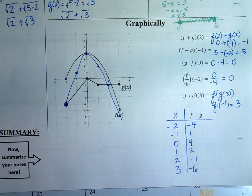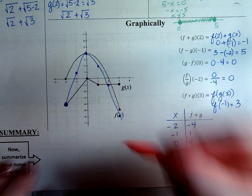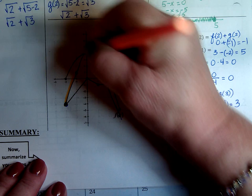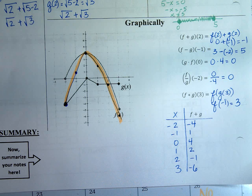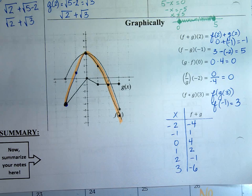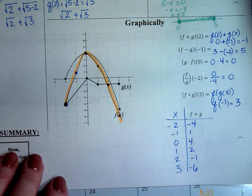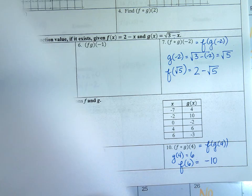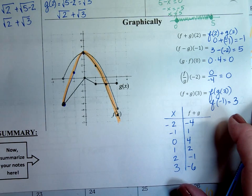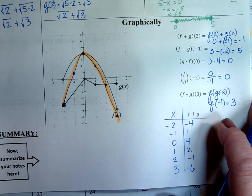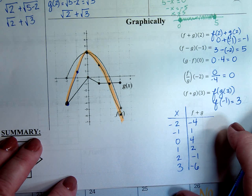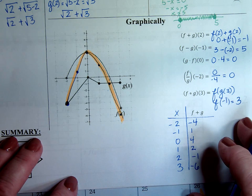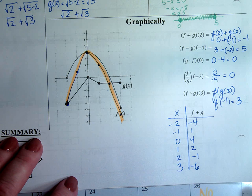That covers the problems we looked at together. You have numbers 1 through 14 to work on, and we'll look at another worksheet on composite functions when we're together again tomorrow. Section 4.3, operations of functions — we fogged and goffed, and we added, subtracted, multiplied, divided, and talked domains. Have a great day, and email me if you have any questions.